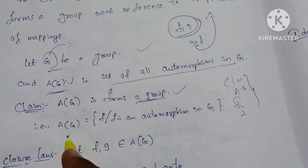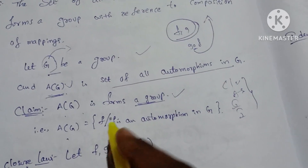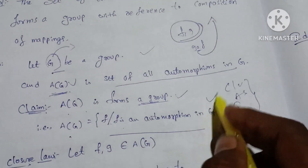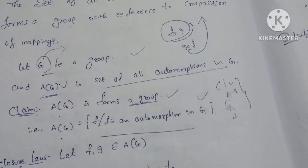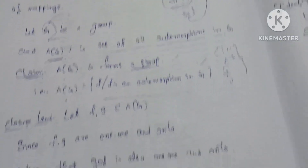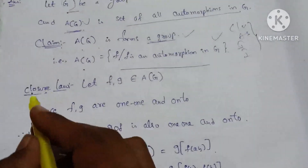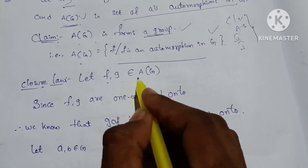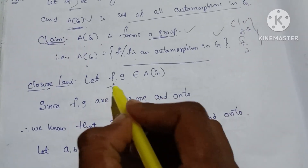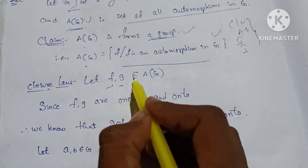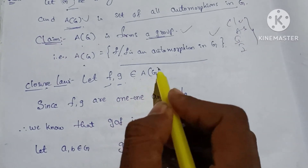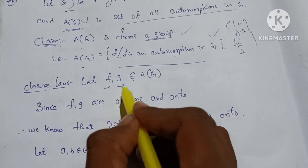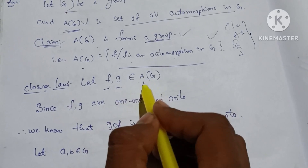First, we prove closure. Let F, G belong to A(G). Here we can show you the functions. F and G belong to A(G). So if we have an automorphism, automatically F and G are one-one and onto.